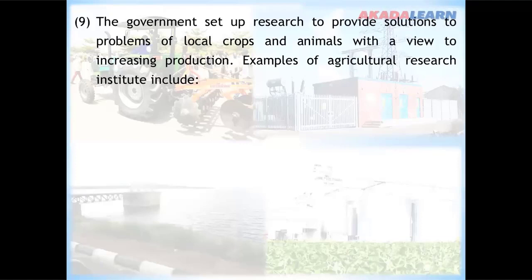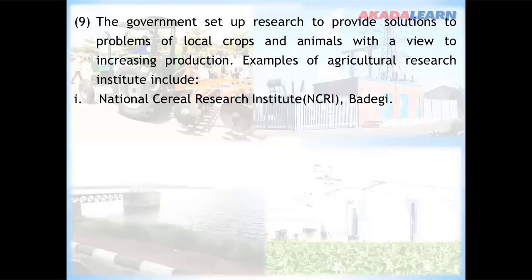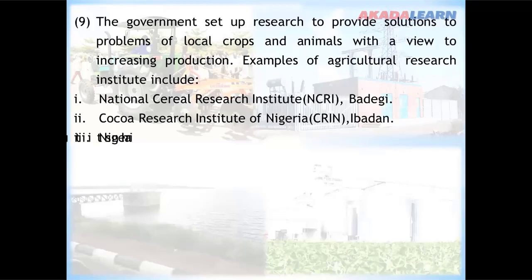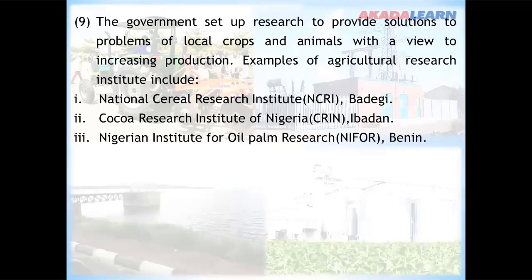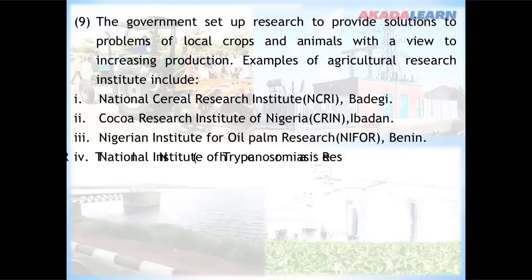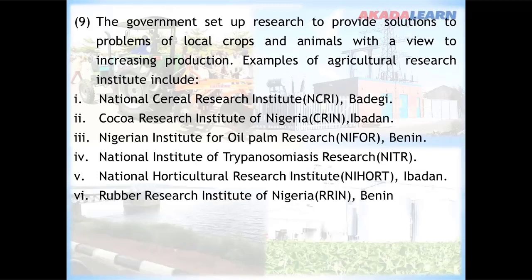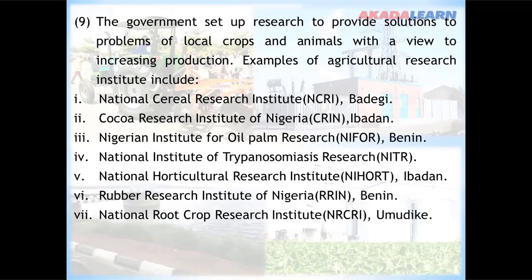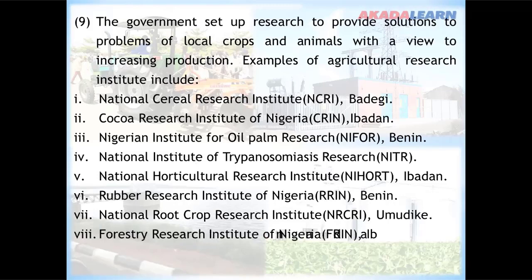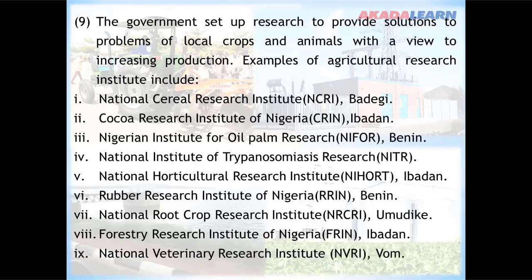Examples of agricultural research institutes are: National Cereal Research Institute in Badeggi; Cocoa Research Institute of Nigeria in Ibadan; Nigerian Institute for Oil Palm Research in Benin; National Institute for Trypanosomiasis Research; National Horticultural Research Institute in Ibadan; Rubber Research Institute of Nigeria in Benin; The National Root Crops Research Institute in Umudike State; and The National Veterinary Research Institute.